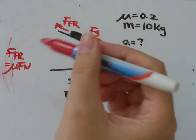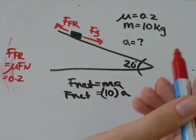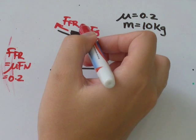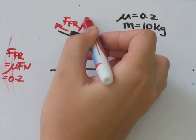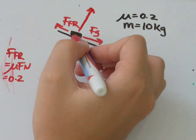We know mu is 0.2, and Fn we don't know, but we do know that Fn is usually related to Mg. It's the same as Mg, just the opposite direction. So Mg, or Fn, is always perpendicular or at a 90 degree angle to the surface.